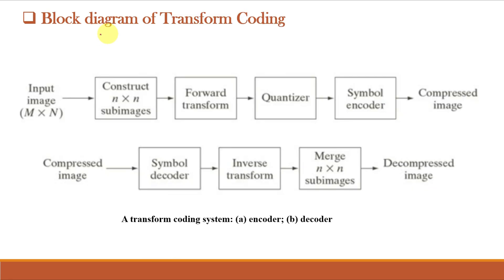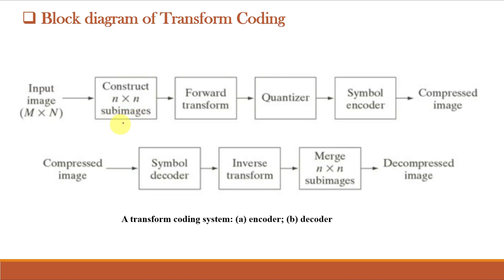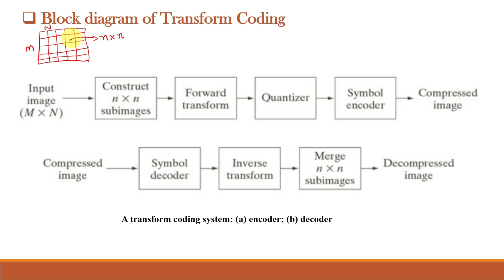This figure shows the block diagram of a typical transform coding system, which we already know from the 37th video class. The difference here is that first we construct n×n sub-images from the input image of size M×N, and finally we merge them. If this is our input image, we subdivide it into n×n sub-images — each sub-image is n×n, usually 8×8 pixels — and we apply the transform to each sub-image.